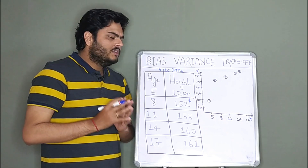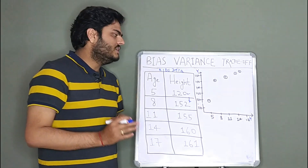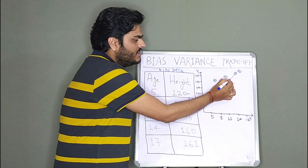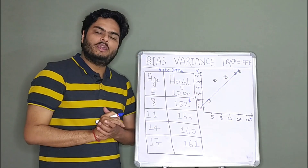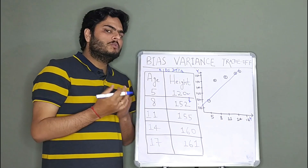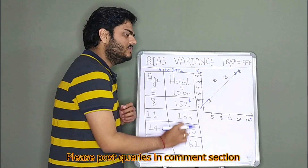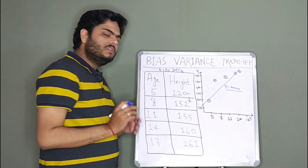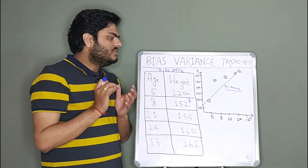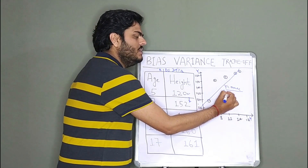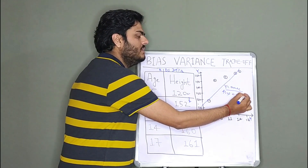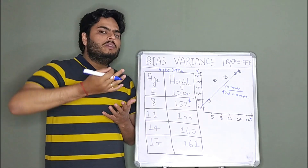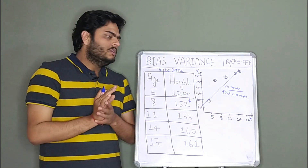A linear regression model is nothing but a line. We take the data points, draw a line, and that is our linear regression line. This line is described by the equation y = mx + c. This is a function of x, so you can write f(x) = mx + c. When model fitting happens, we get to know what m and c are, and then for any given x we can compute y or f(x). This line is our f(x).